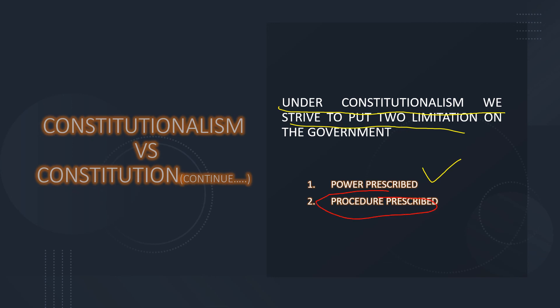First one, power prescribed: ki government ko kya kya power dhi gai hai. That means government kya kya kar sakti hai aur kya nahi kar sakti. Matlab, wohi power use kar sakti hai joh prescribed hooti hai. And second one, procedure prescribed: ki government kis tarah se, kaun se tariqe se apne power use kar sakti hai. Usse kehte hain procedure prescribed.